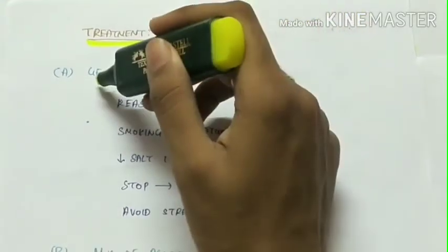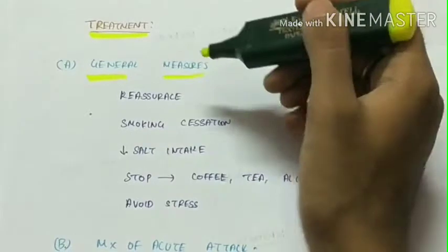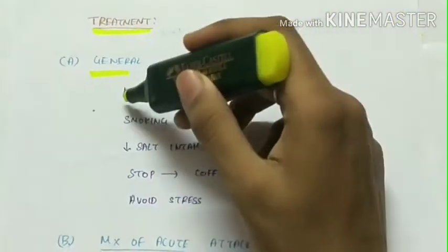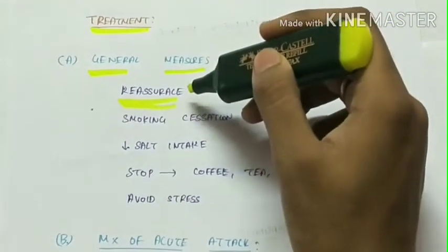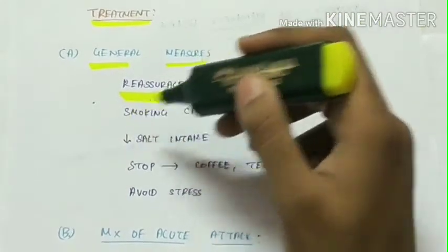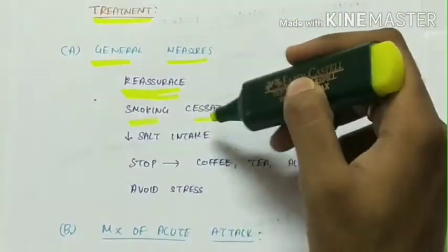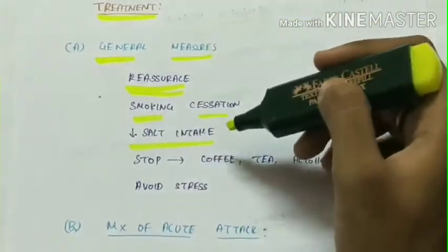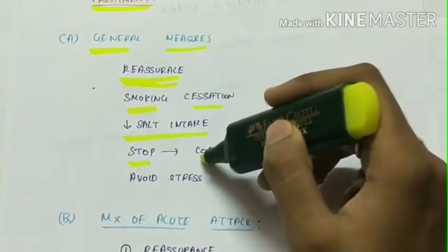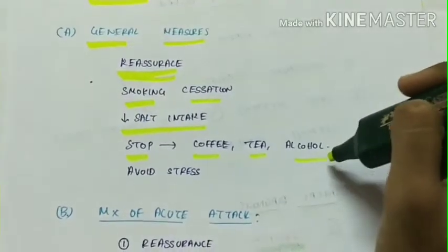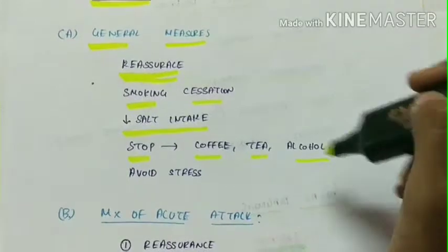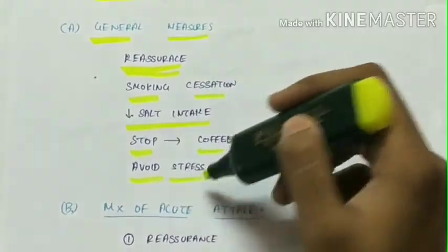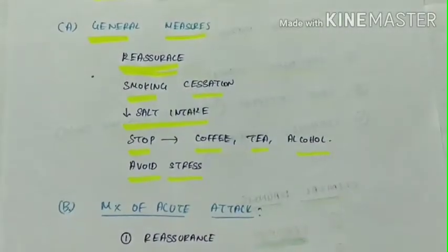The treatment of Meniere's disease: first let's see the general measures. The most important thing is to reassure the patient. Other general measures are smoking cessation, decreasing the salt intake, and to stop the intake of coffee, tea, and alcohol to reduce the caffeine, and to avoid stressful lifestyle.